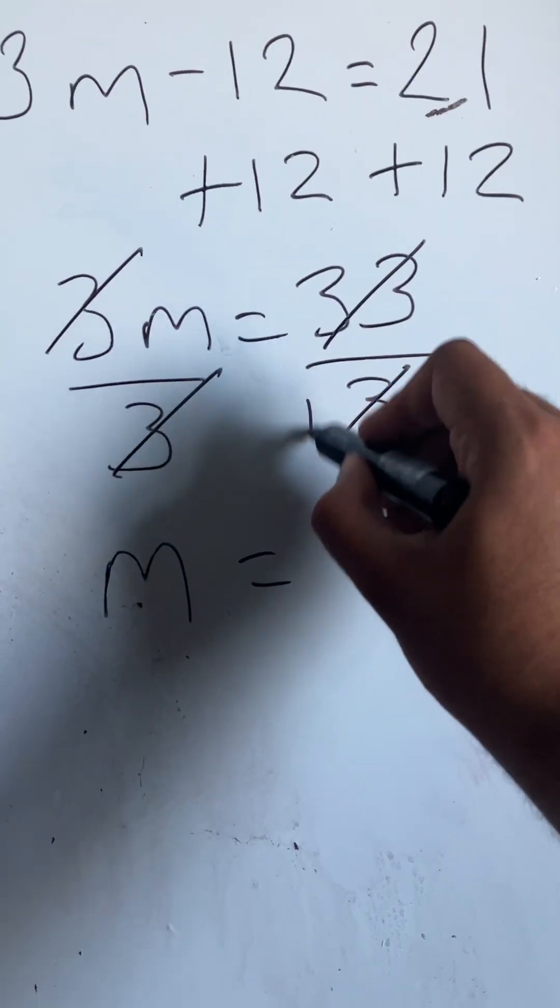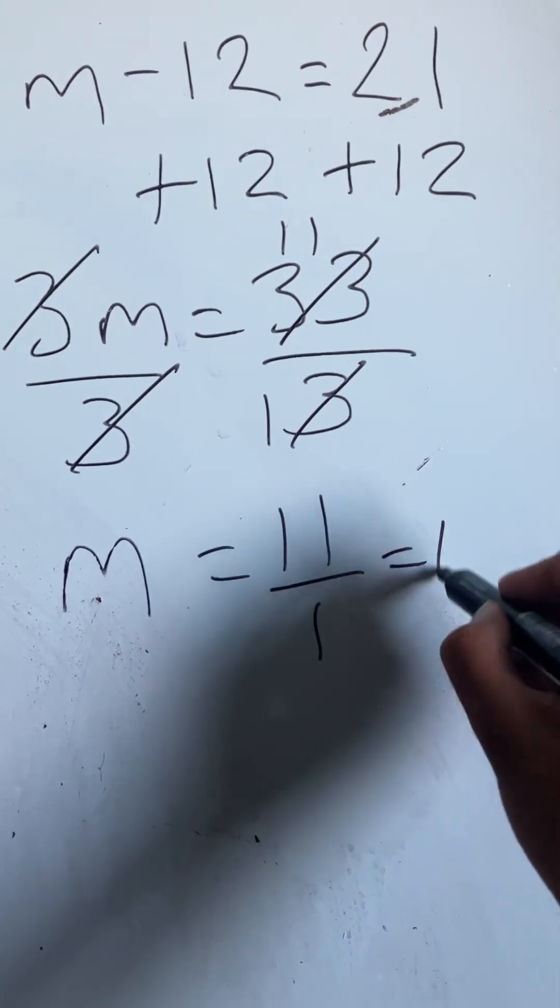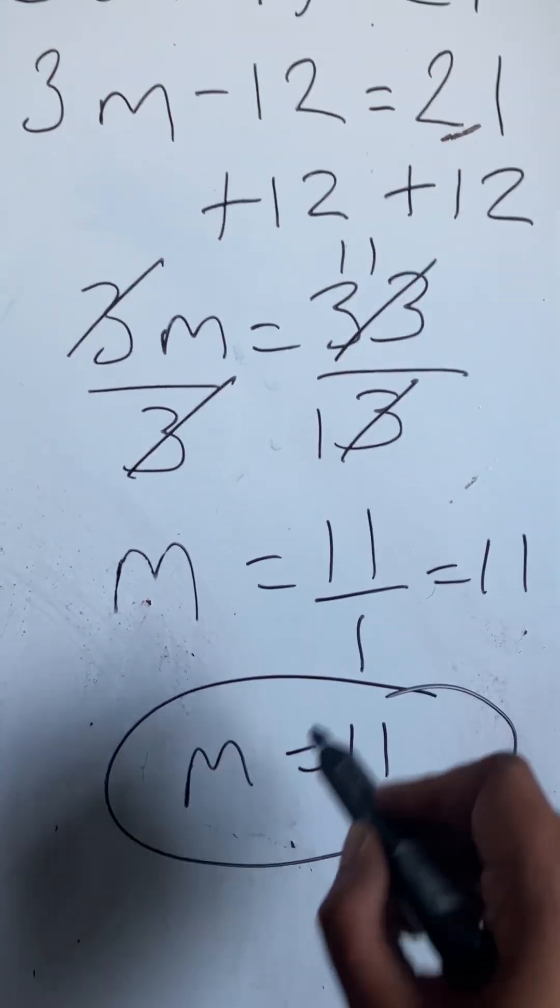That's going to go to 11. So put 1 there, 11 there. So I get 11 over 1 which is just 11. So m is equal to 11. And that's how to solve that equation.